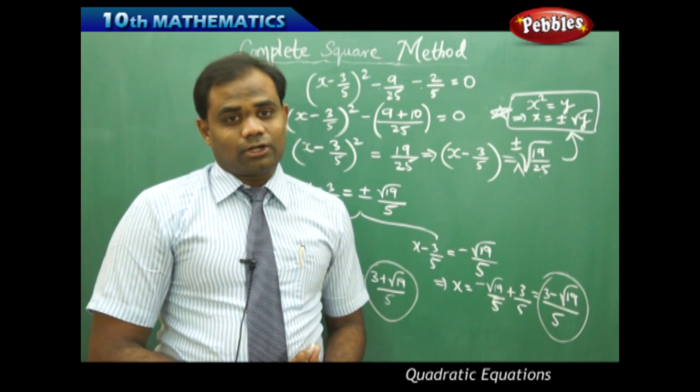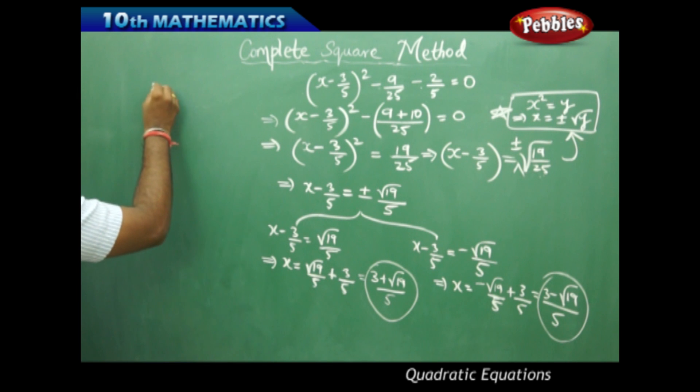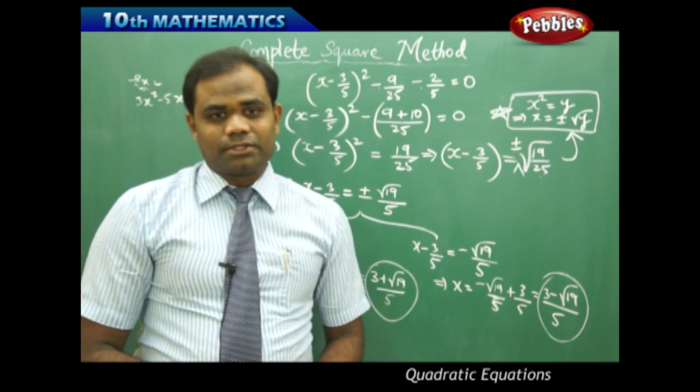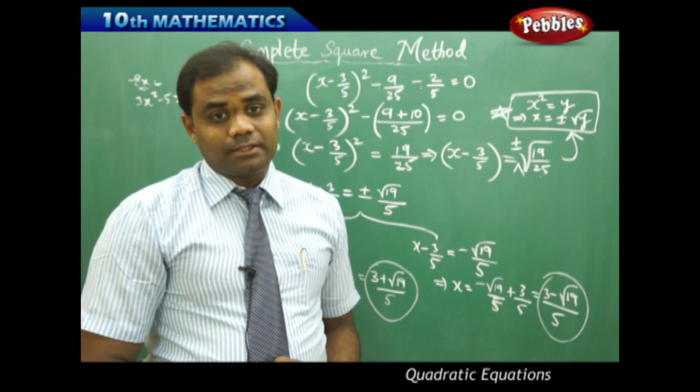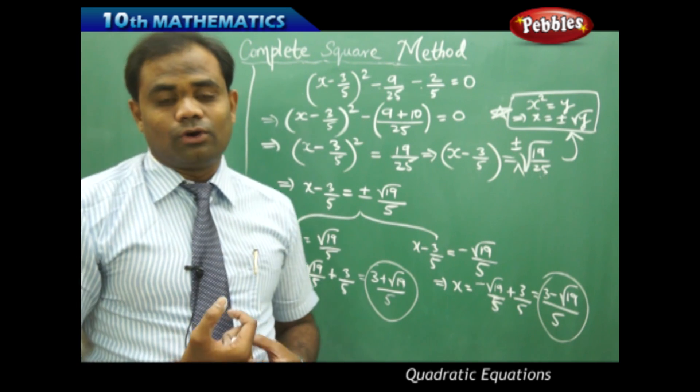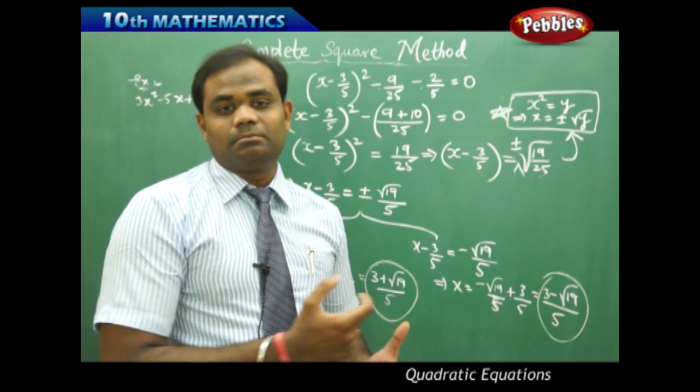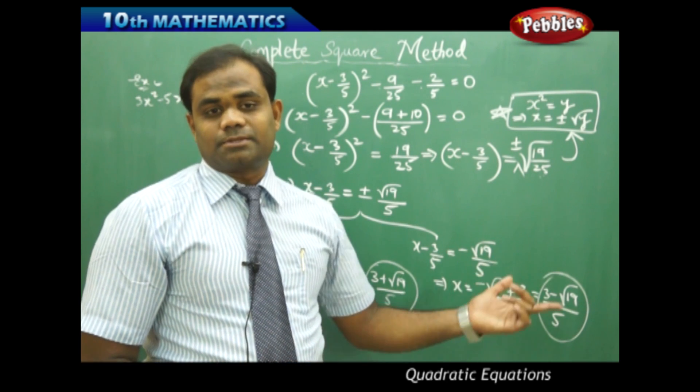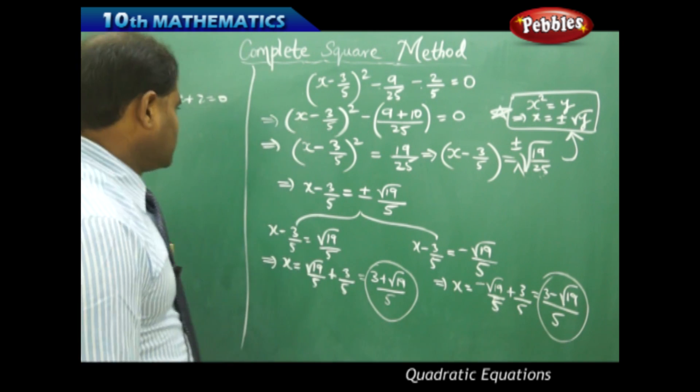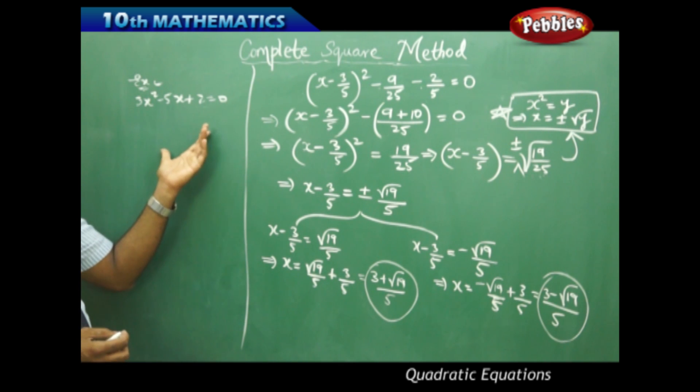Now sometimes there are quadratic equations in the form, say for example, 3x² - 5x + 2 = 0. In case of such quadratic equations the complete square method can be used but needs to be identified with the exact formula of a² - 2ab + b² or a² + 2ab + b².